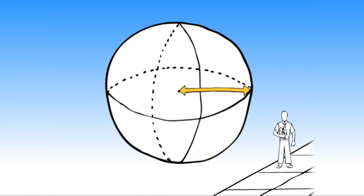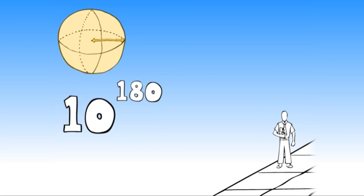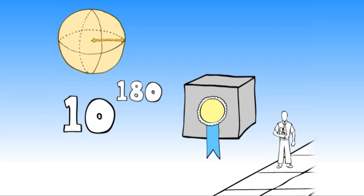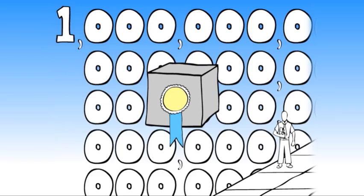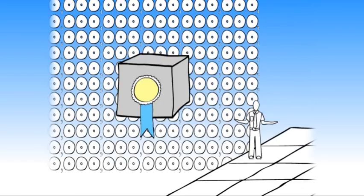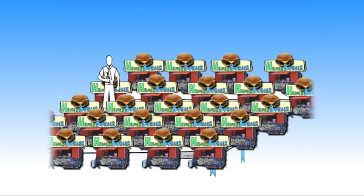But that's just the radius. If you want to make sure to count all of space, you have to take the volume, which is around 10 to the 180th smallest possible cubes. That's a one with 180 zeros following it. And you can think of it as counting every single unique place in the universe.